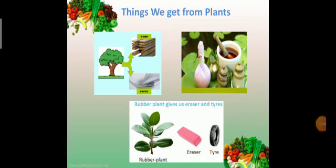Other things that we get from plants. Plants give us wood and from this wood, we can make furniture and paper. Plants give us medicines. Ajwain, aloe vera, tulsi and so many other plants helpful for medicines. Then rubber plant. Rubber plant gives us eraser and tire. We make eraser and tire from this rubber plant.